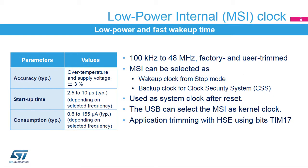The low-power internal oscillator, or MSI, is a multi-frequency RC oscillator in the 100 kHz to 48 MHz range, providing 3% accuracy and fast wake-up times. The MSI is trimmed during production testing and can also be user-trimmed. It can be selected as the clock at wake-up from system stop, and is selected as system clock after reset. Some peripherals, such as the USB, can use the MSI as kernel clock. The MSI frequency can be trimmed versus HSE using the TIM17 bits in capture mode.